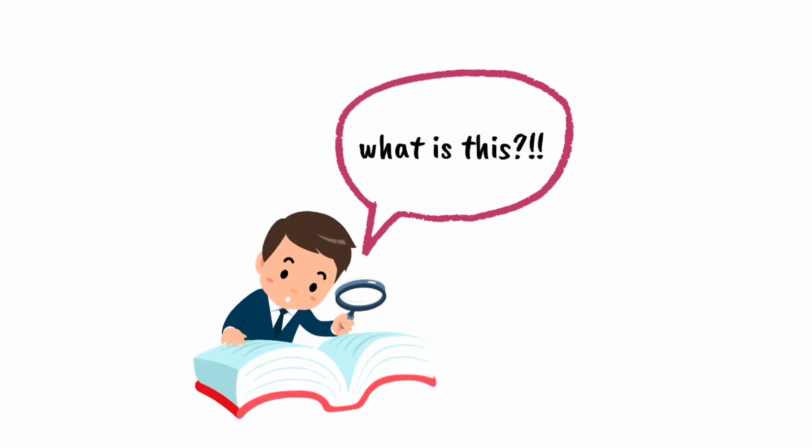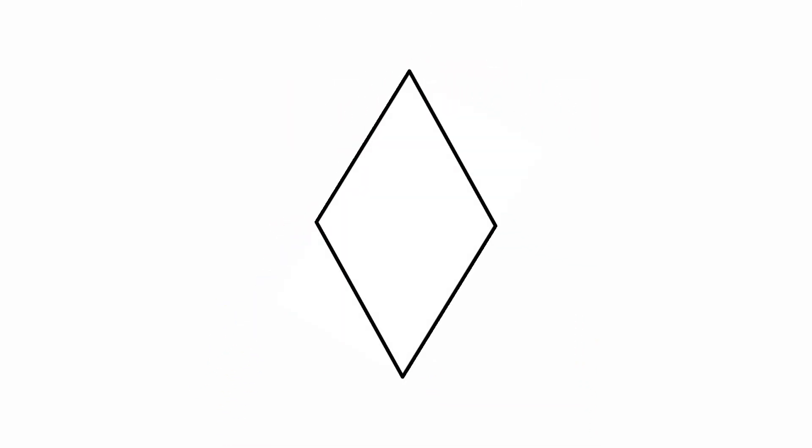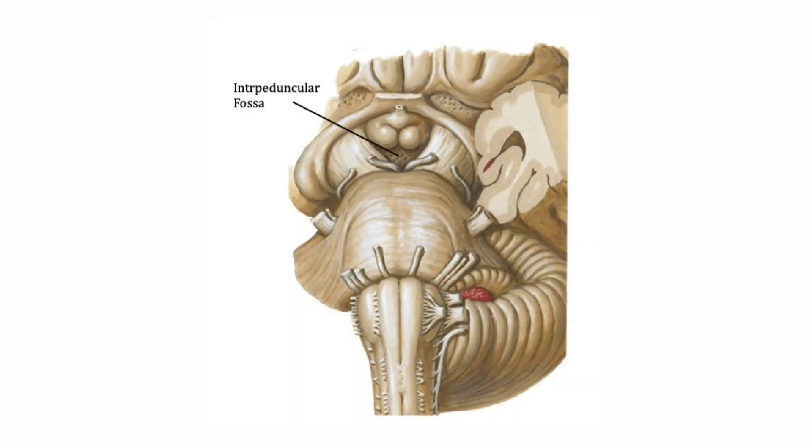So, what is Interpeduncular Fossa? It is a rhomboidal space found on the base of the brain. Now, moving on to boundaries.